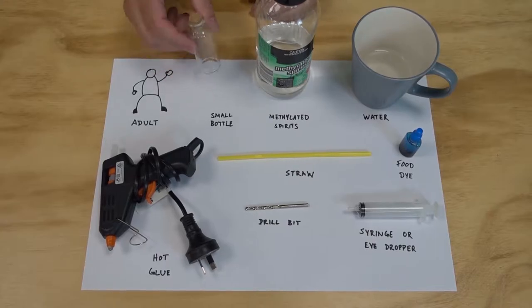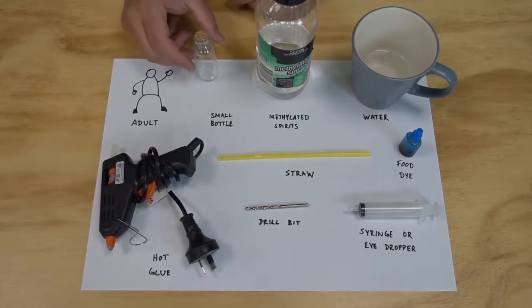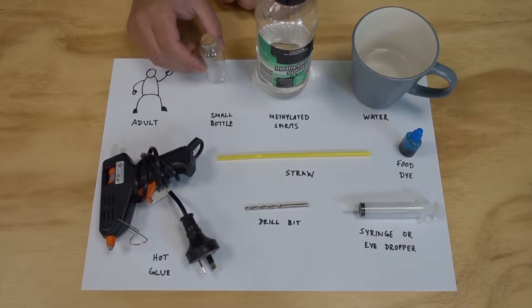You're going to want a small bottle. Now mine's got a cork lid and it's quite small. You could just use a plastic bottle for this. It'll just change the amount of other ingredients you'll need. A plastic lid will definitely work well. I'm just going with this because it's what I had laying around.